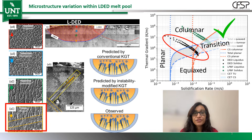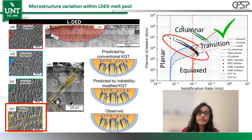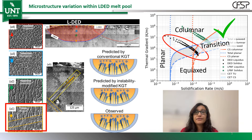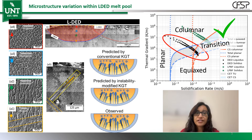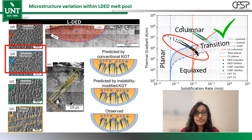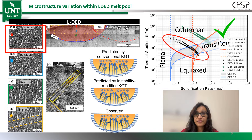And here's where things got interesting. For the DED process, the microstructure lined up perfectly with what the map had predicted and we were really happy to accomplish this daunting task. The map could successfully predict the planar grains at the bottom, the dendritic grains at the interior, next the transition grains, and finally the equiaxed grains at the very top. So far so good, right?